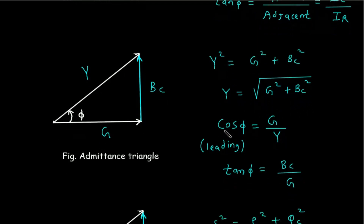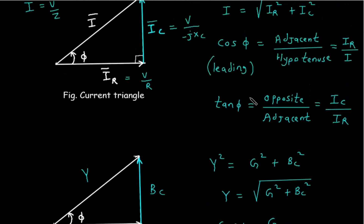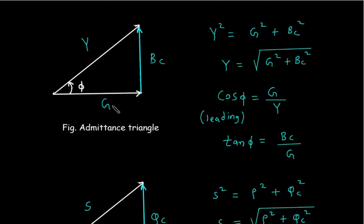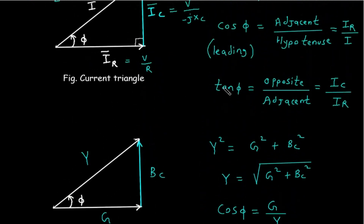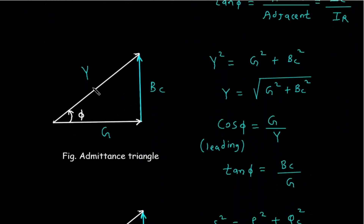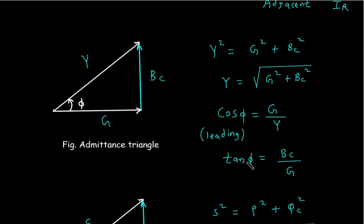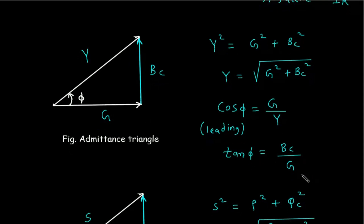The power factor cos phi again equals adjacent side upon hypotenuse. Here the adjacent side is G and the hypotenuse is Y, so cos phi equals G by Y, and this power factor will again be leading because of the capacitor. Tan phi equals opposite upon adjacent, where the opposite side is BC and adjacent side is G, so tan phi equals BC divided by G.